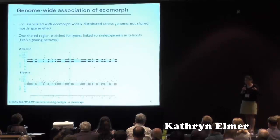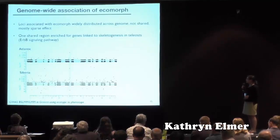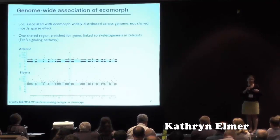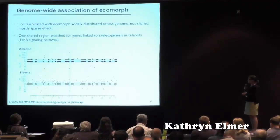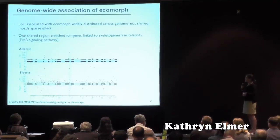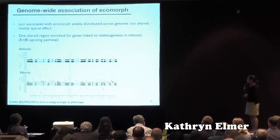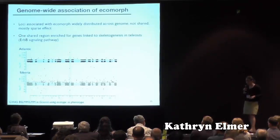We then looked at the genetic association between ecomorph phenotypes and the genetic basis, finding that loci were widely distributed across the genome. These are highly polygenic traits associated with ecomorph — differing in head shape, body size and growth, and many different aspects. The red dots show regions significantly associated with ecomorph, but they are mostly of sparse effect distributed genome-wide. We had one shared region between both lineages that was significantly shared, which included genes linked to skeletonogenesis in teleosts, including signaling pathways.